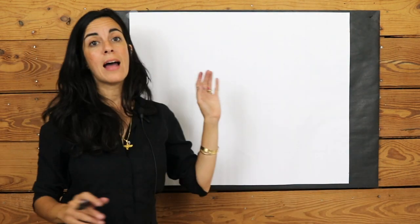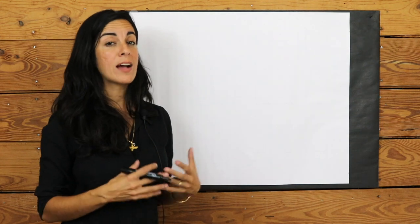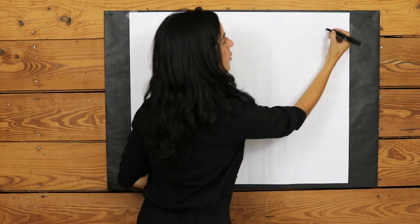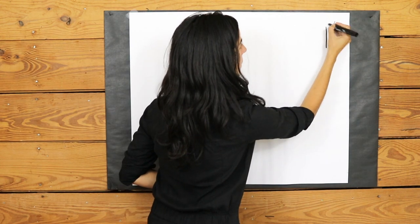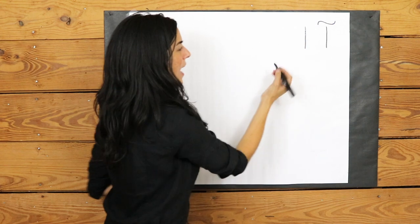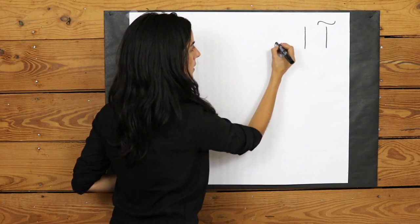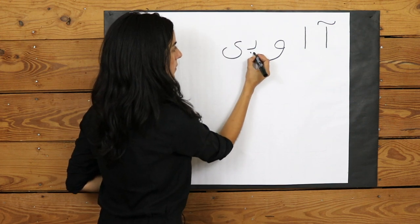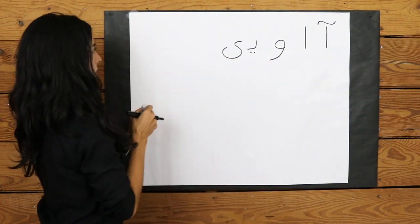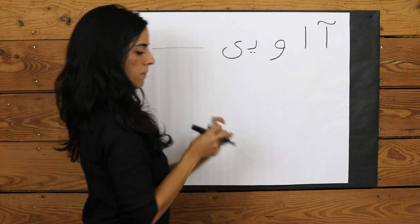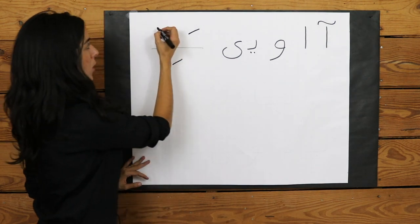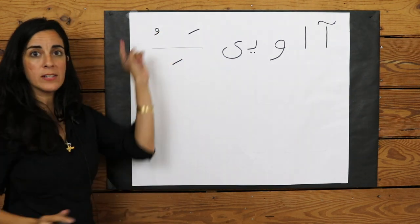So now we're going to go over how our vowels interact with one consonant from the Persian alphabet. So let's go over our vowels again very quickly. This is an A, A with a hat, A without a hat. And then if this is the line of our page, if there's an accent above it's A, accent below E, and an O above it's an O.